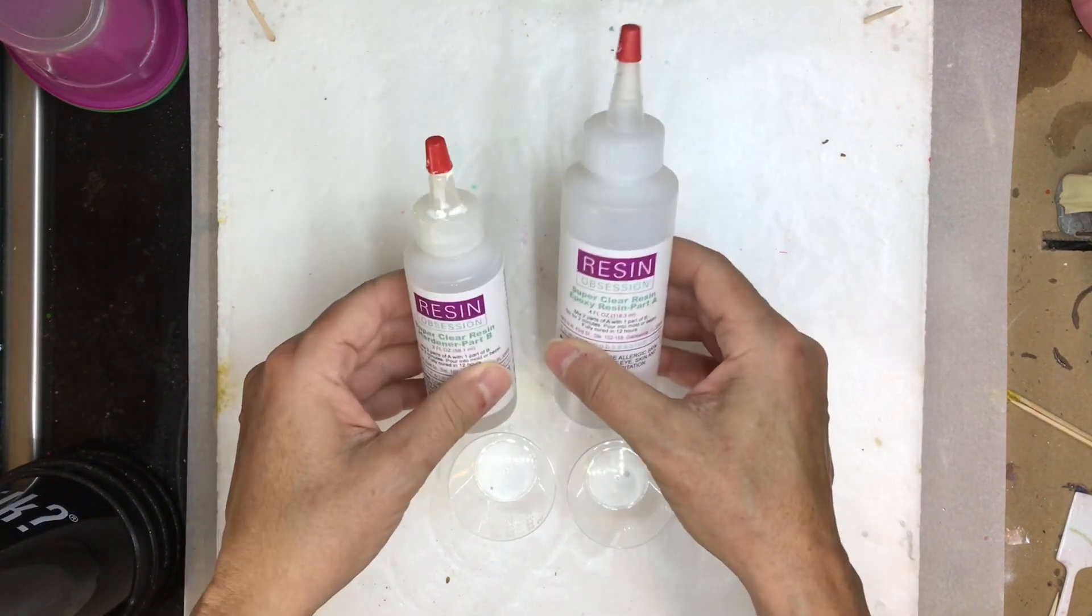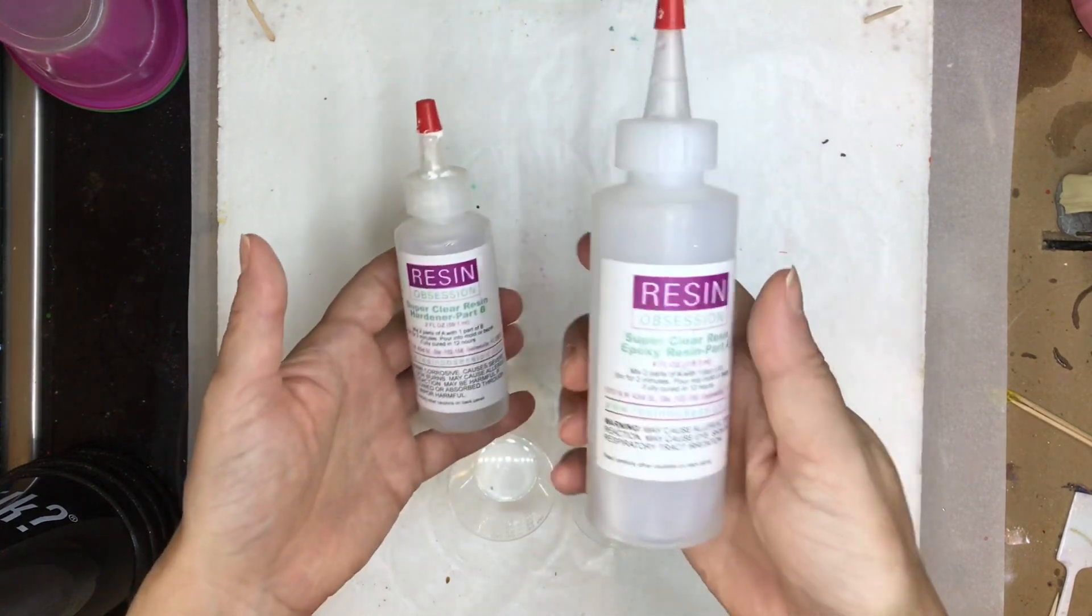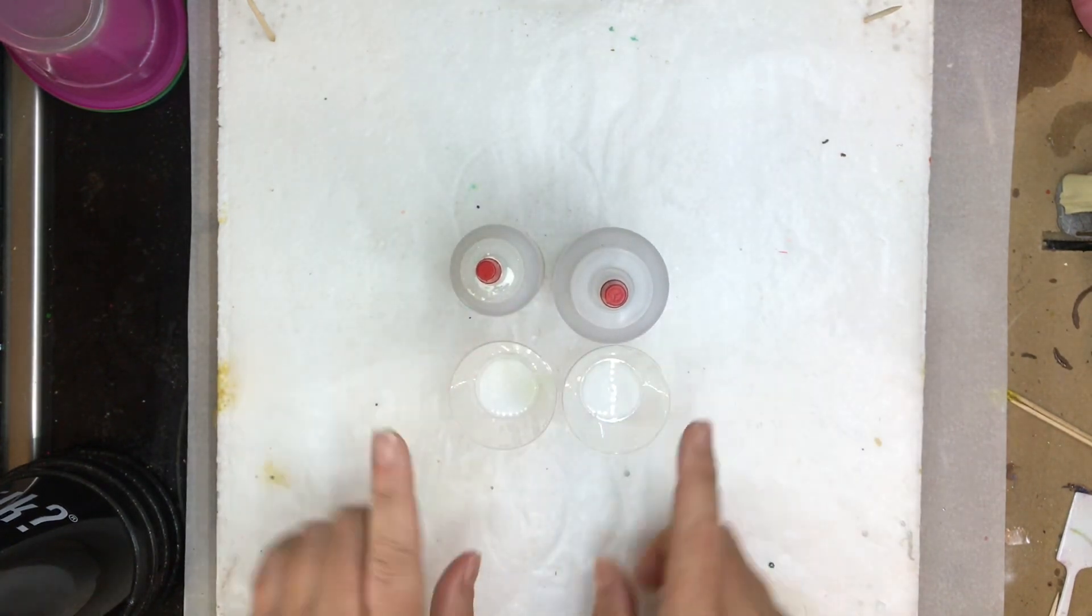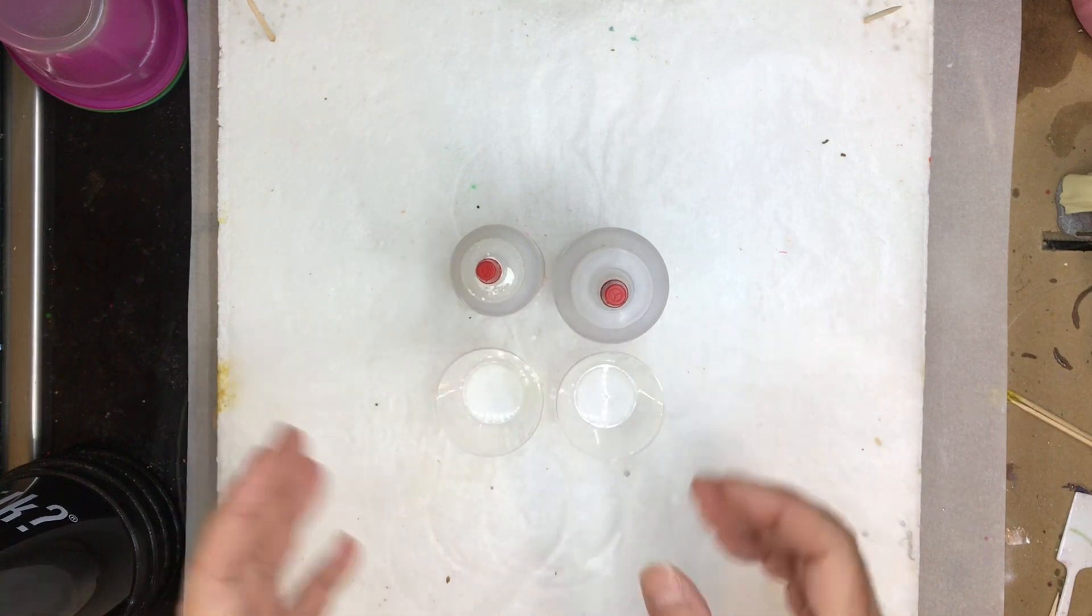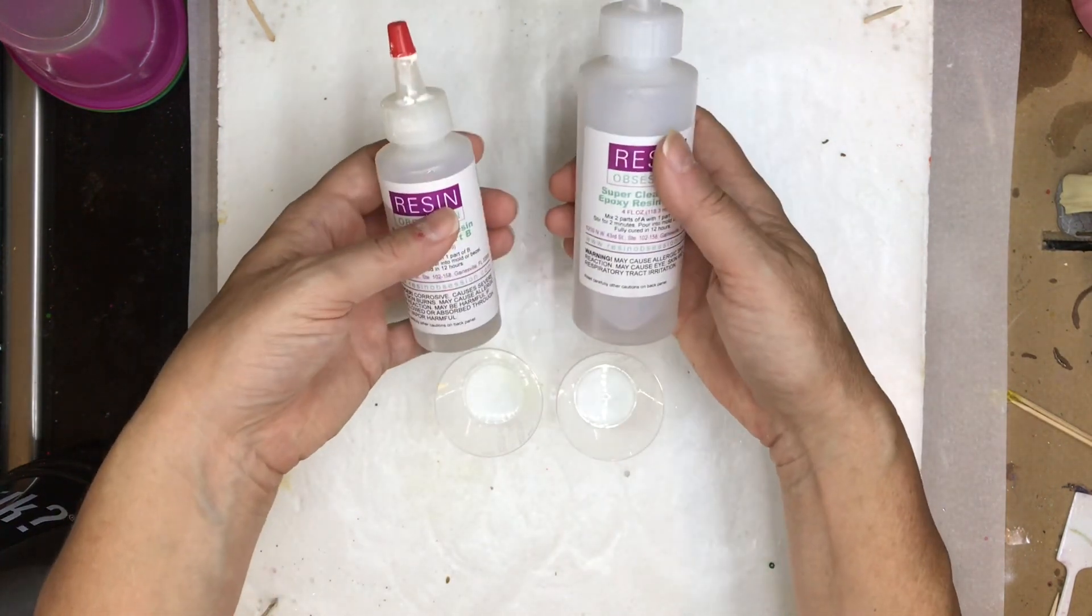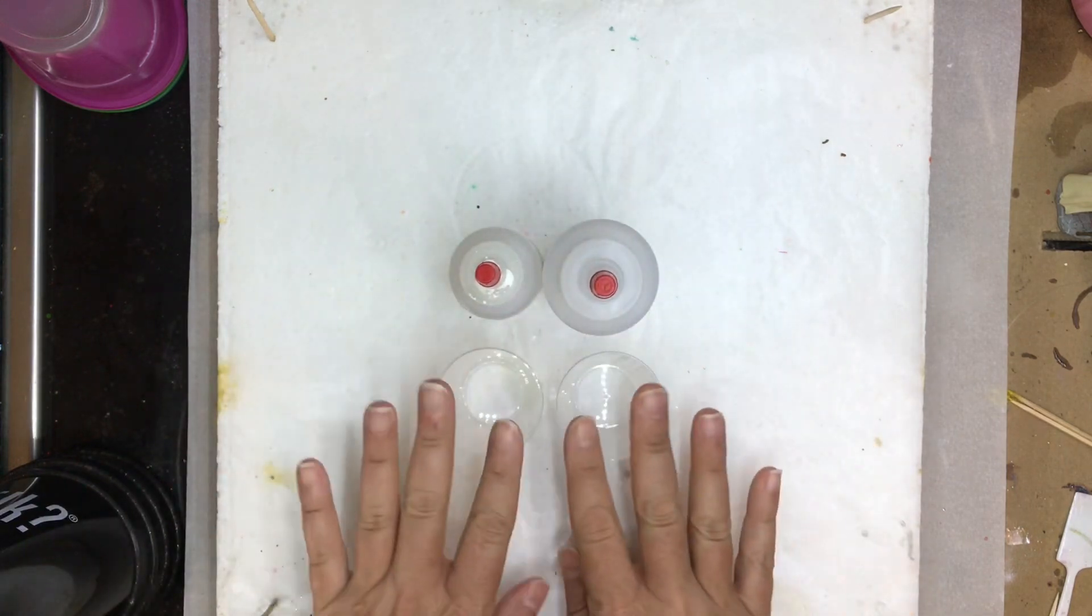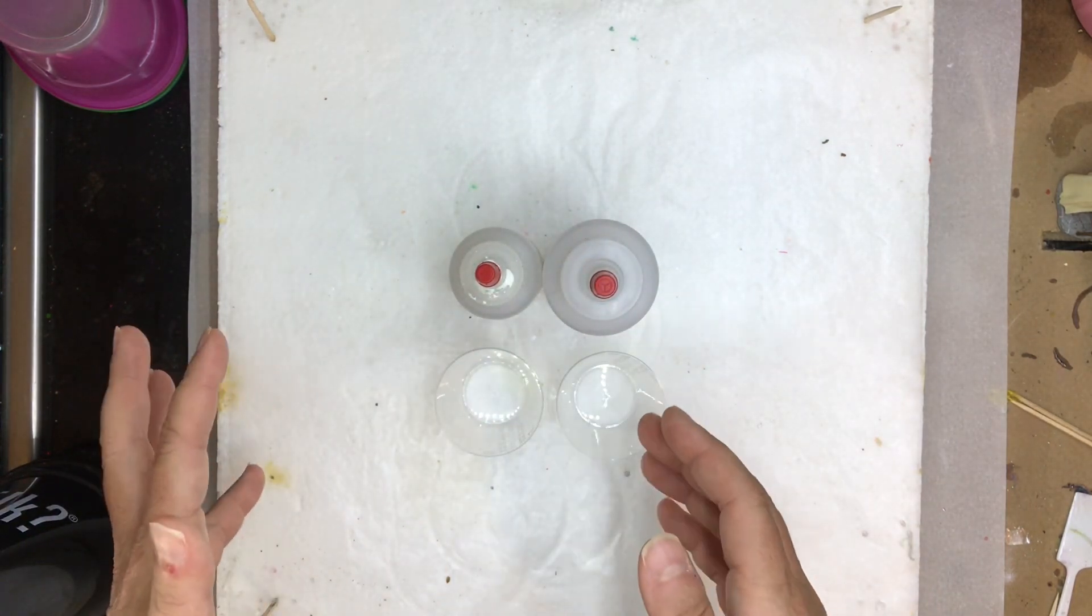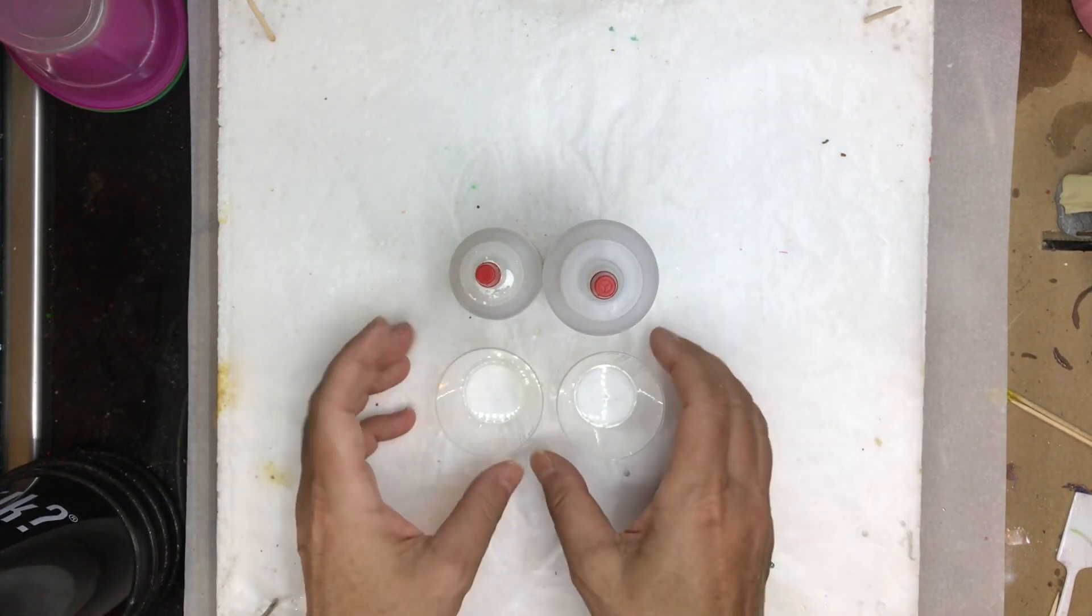Today I'm going to be using the Resin Obsession super clear resin, it's a two-part resin. Normally by itself we've got resin and hardener, by themselves they don't do anything. But when you mix the two parts together, you've got a certain period of time known as your resin's pot time, open time, or work time before it's going to start to cure or enter that gel phase.